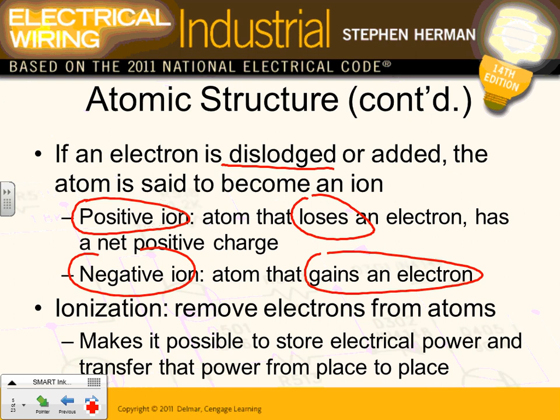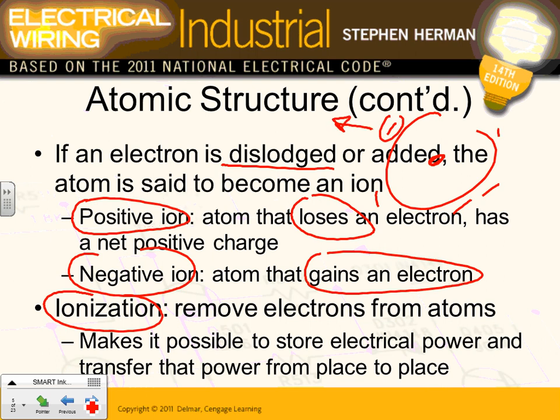Ionization — removing electrons from the atom. Every time you remove one electron from the orbit, you ionize the atom and it becomes positively charged. Transfer of this charge from place to place makes it possible to store electrical power. When you ionize it, it makes it possible to store electrical power and transfer power from place to place. That's where you get positively charged and negatively charged objects.